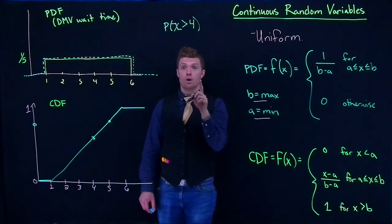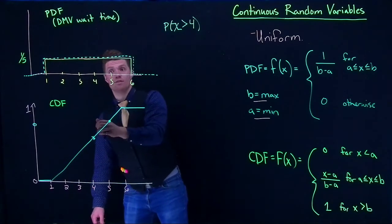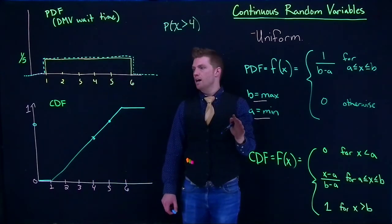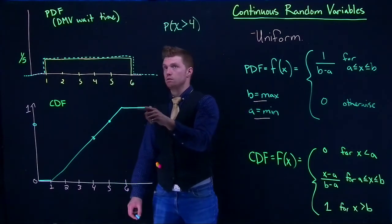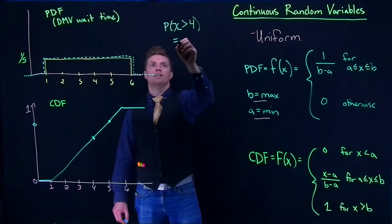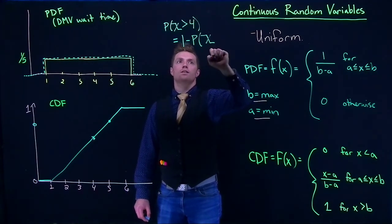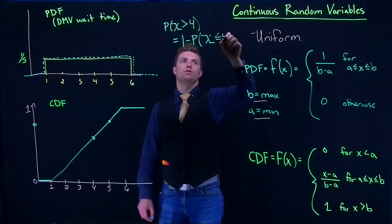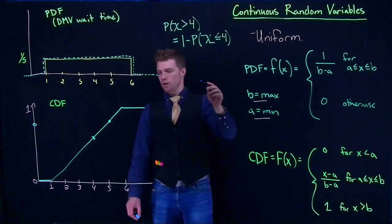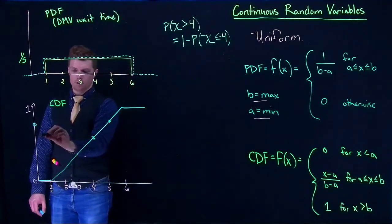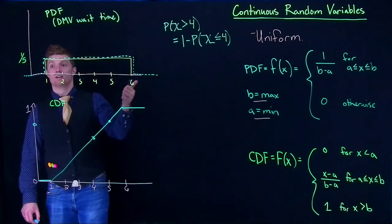Alternatively, what could we do? Remember we can do one minus something from the CDF to get us greater than, and we're going to have to use this trick all the time coming up with our normal distributions. So we could say that equals one minus the probability of x being less than or equal to four. We want to know probability of being less than or equal to four, come to our CDF, grab this value, one minus, and it would give you the rest of the area.